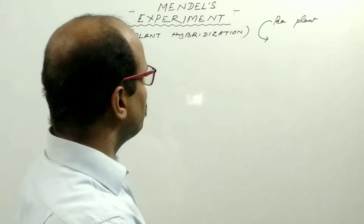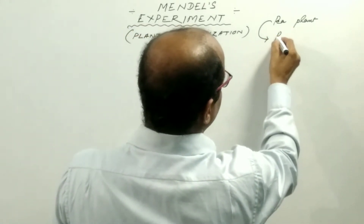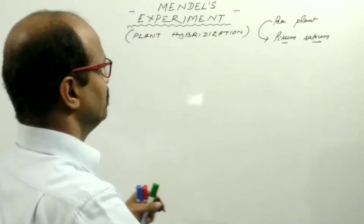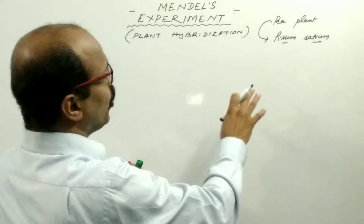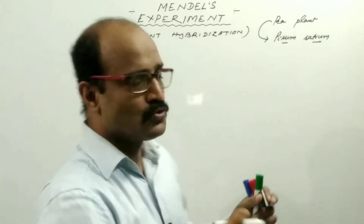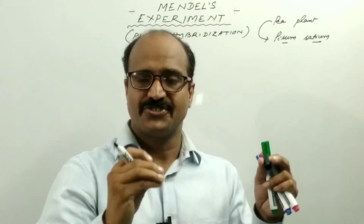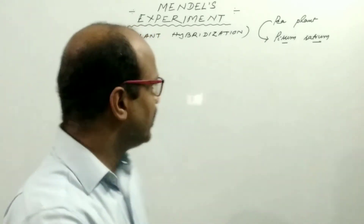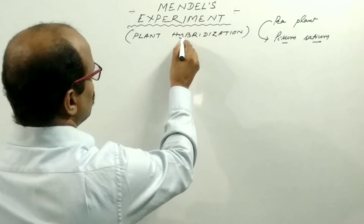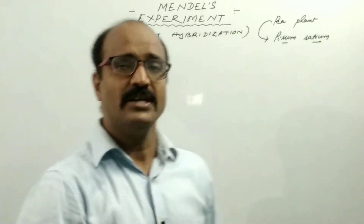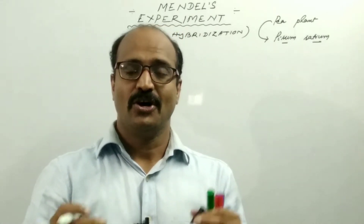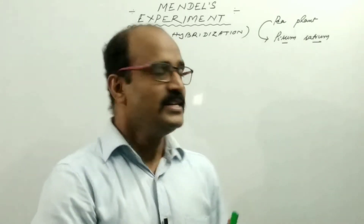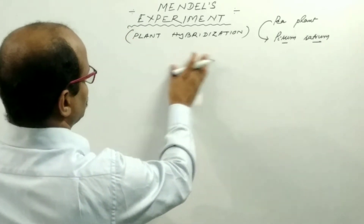That's why Mendel chose garden pea plants, and the scientific name of garden pea plants is Pisum sativum. Mendel did his experiment on Pisum sativum. He selected different strains of Pisum sativum and crossed them to produce different types of hybrids. This process is known as plant hybridization, or in plant science, artificial plant hybridization or artificial pollination, because Mendel conducted his experiment artificially.